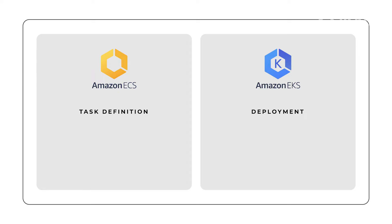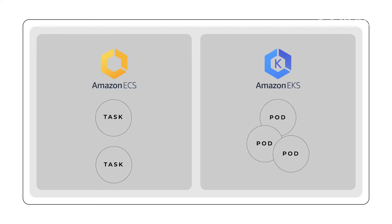Here's where both technologies part ways — although named differently, both task definition and deployment are a set of instructions to tell what our containers will be: their image, environment variables, CPU and memory, etc. And finally, at the core of everything, we get the simplest unit we can have: the task or pod, which is our actual container or containers that are running. This can be scaled, deleted or modified with ease by our orchestrators to meet demands and requirements.